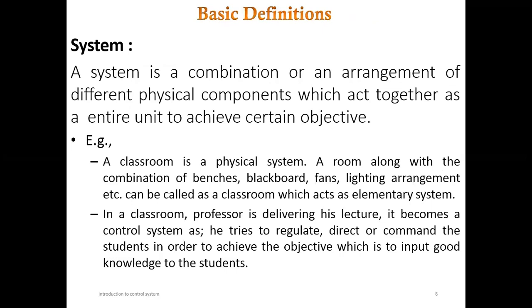The basic definition of a system is a combination and arrangement of different physical components which act together as an entire unit to achieve a certain objective. The best example is a water level tank — the float, water inlet valve, water outlet valve, and tank are all physical components arranged to attain the objective of providing water without overflow. Another example: a classroom with benches, blackboard, fans, and lighting is a physical system.